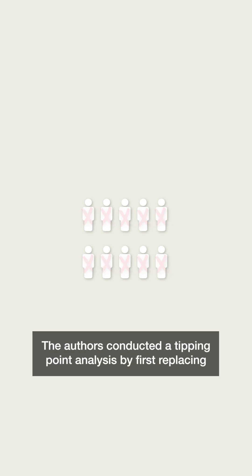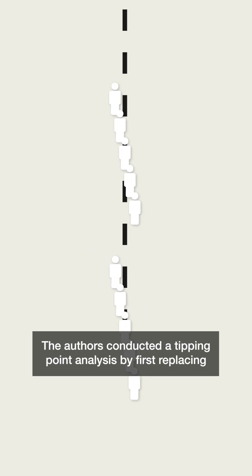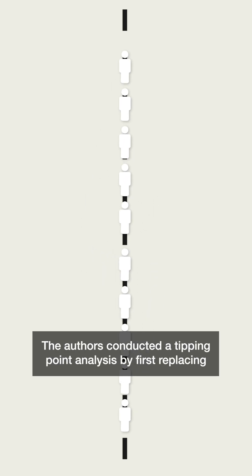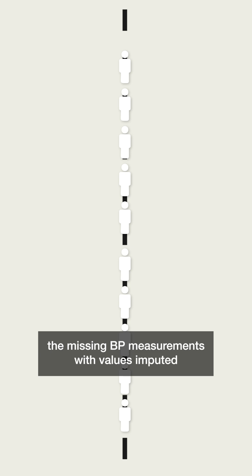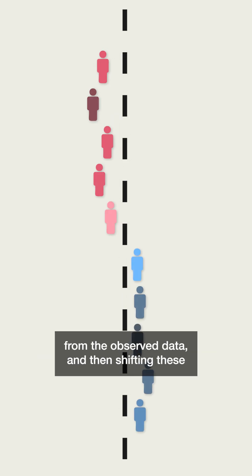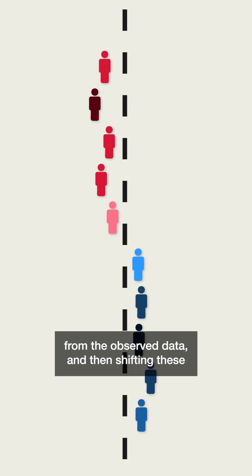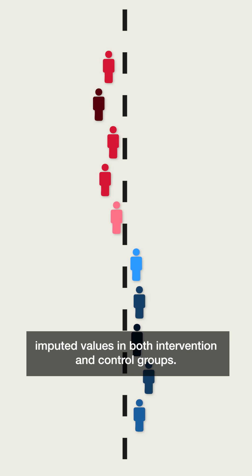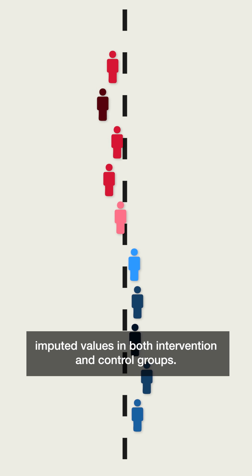The authors conducted a tipping point analysis by first replacing the missing BP measurements with values imputed from the observed data, and then shifting these imputed values in both intervention and control groups.